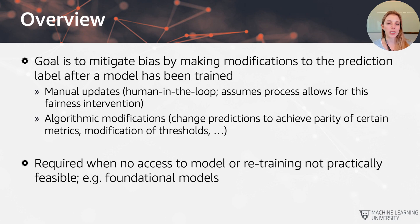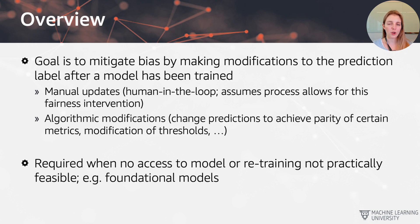The first option would be a manual update. This refers to a scenario where there's a human in the loop and the model makes suggestions. There's then a final verification step by a human who may either agree or disagree with the model predictions, and the final output comes from a combination of the human reviewer and the model suggestion.